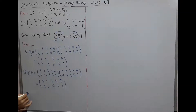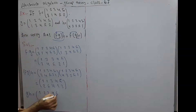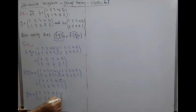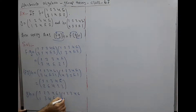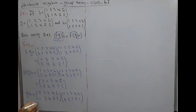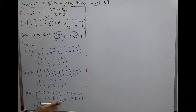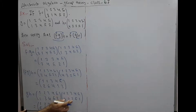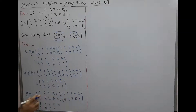Now we find the right side: g∘h equals g — (1 2 3 4 5 / 1 3 4 5 2) — into h — (1 2 3 4 5 / 4 3 2 5 1). Image of 1 under g is 1, image of 1 under h is 4. Image of 2 under g is 3, image of 3 under h is 2. Image of 3 under g is 4, image of 4 under h is 5. Image of 4 under g is 5, image of 5 under h is 1. Image of 5 under g is 2, image of 2 under h is 3.